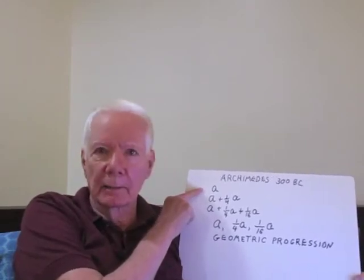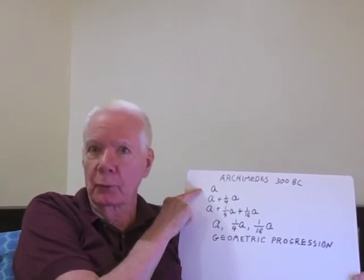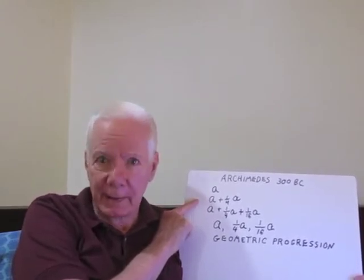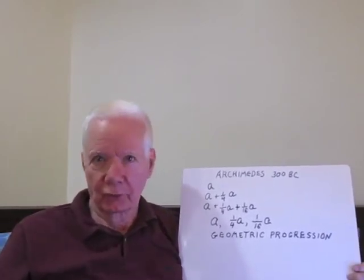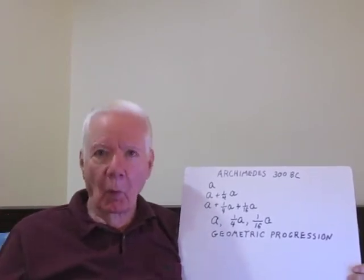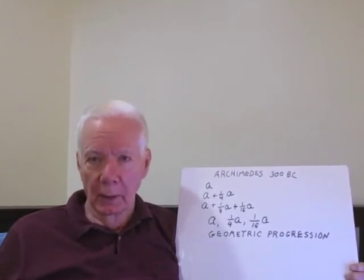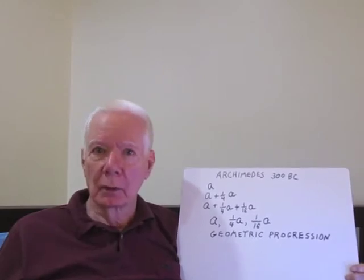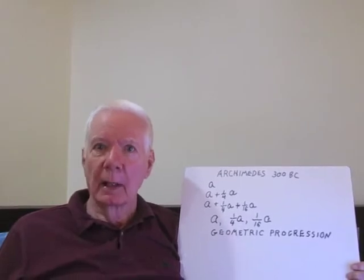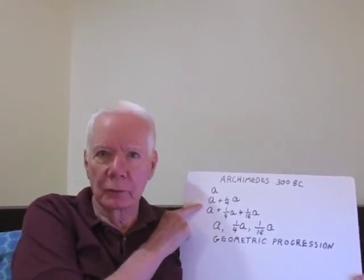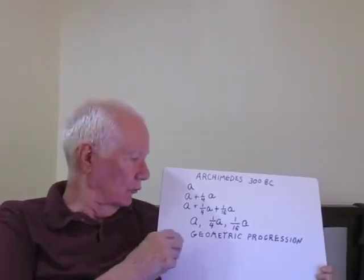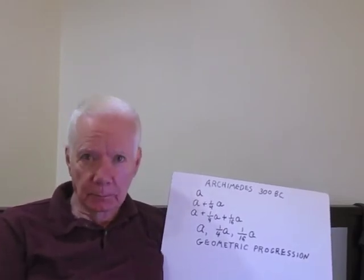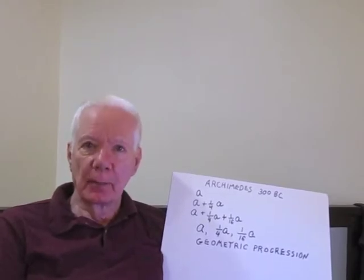Now, let's say A is the area of the original triangle, our first approximation. We now have a second approximation, which is A plus one-fourth A. But now we continue the process. We inscribe more triangles — four more triangles at the third step — and they contribute one-sixteenth more area, and that gives us our third approximation. We recognize these numbers, A, one-fourth A, and one-sixteenth A, from algebra. They're called a geometric progression.